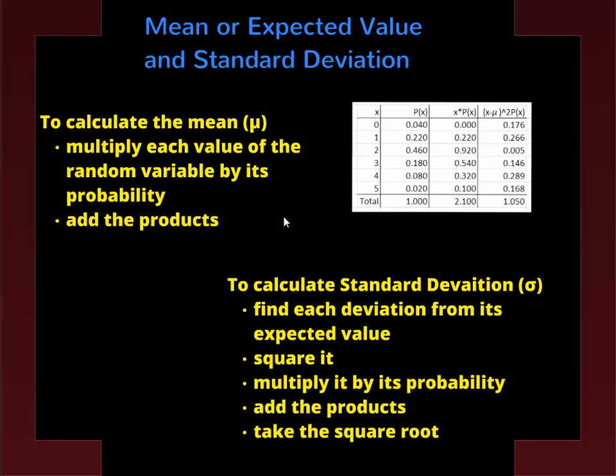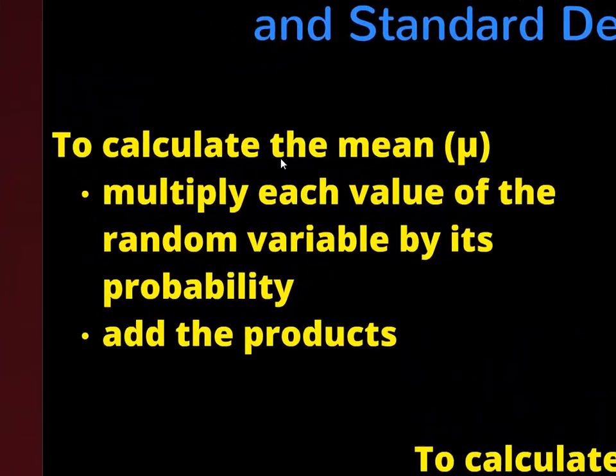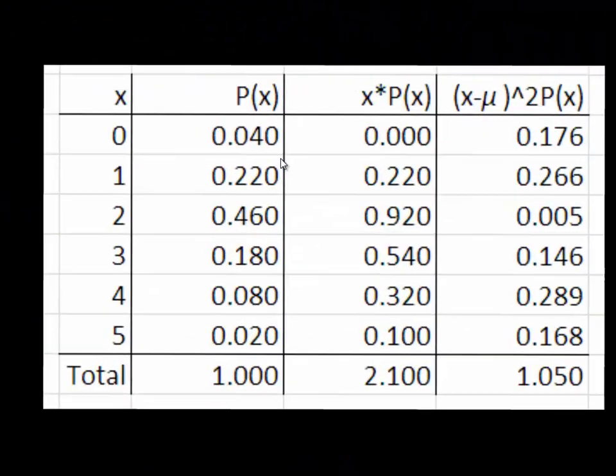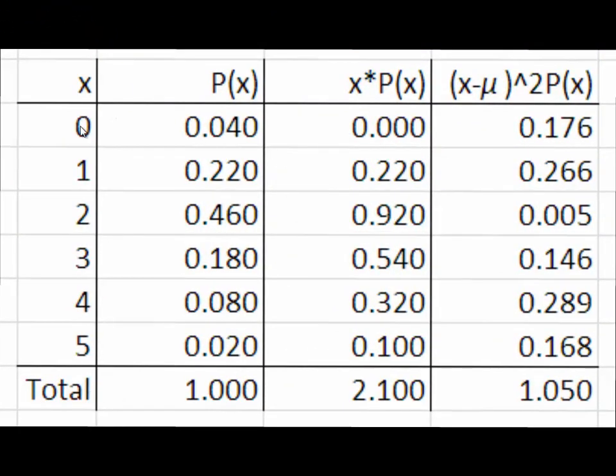So the binomial, just like other things, have a mean and a standard deviation. The mean and the expected value are the same. To calculate the mean, we have to multiply the probability times the outcome and then add them all up. So as I'll show you here in a table, here's our outcomes, here's our probabilities, and we multiply them together. That's this column here. When we add them up, this is our mean or expected value.